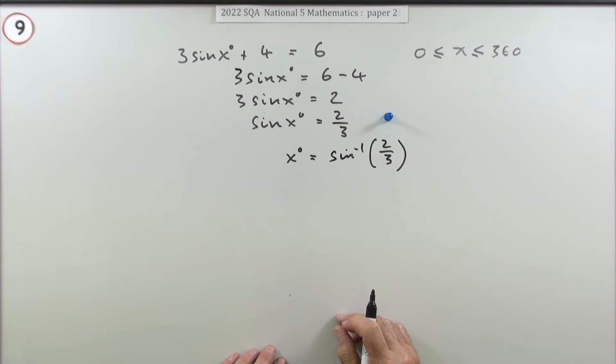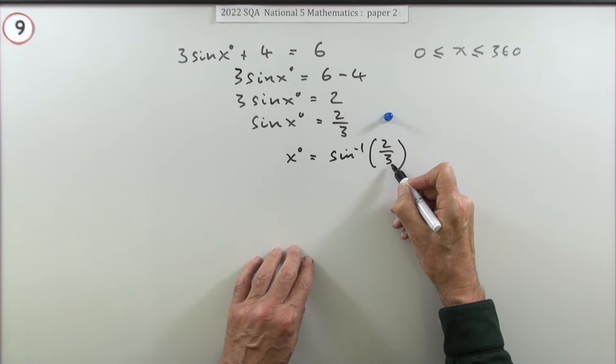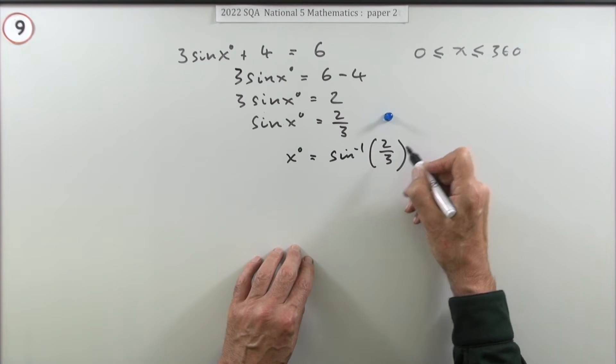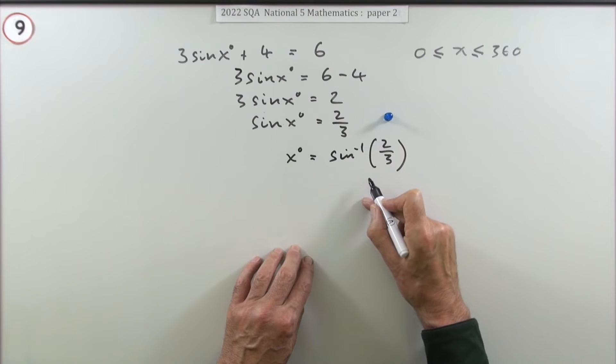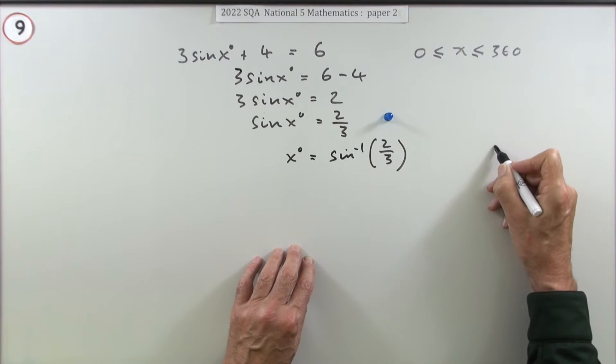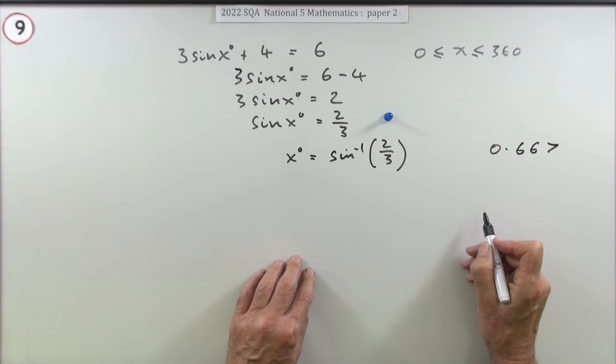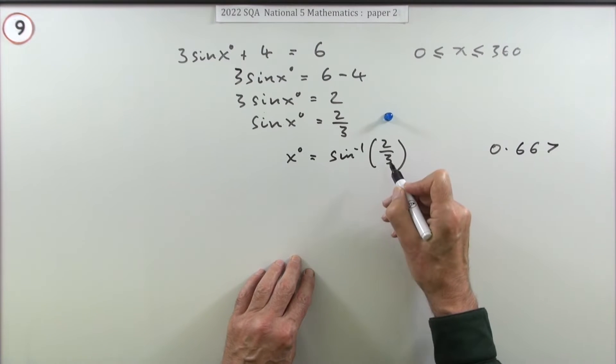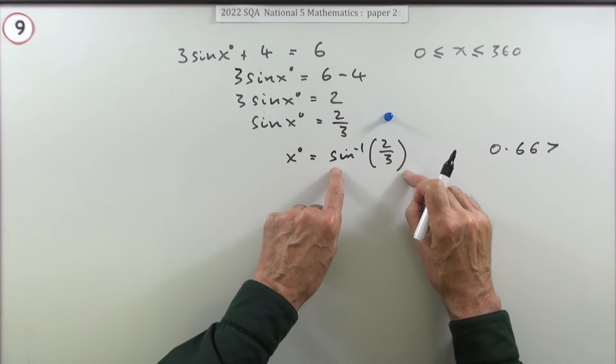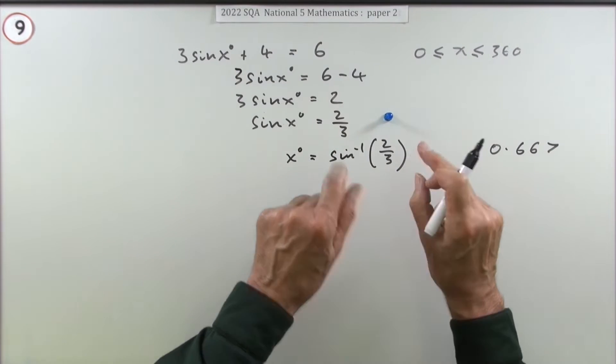Now if you work out two-thirds, the answer is 0.666 forever. Don't put down a value that's rounded off too much. Usually have three decimal places when you put it down, so at least 0.667. But you don't need to do that because you can just keep it exact and put that into your calculator to get the acute angle that will be related to the answers you require.